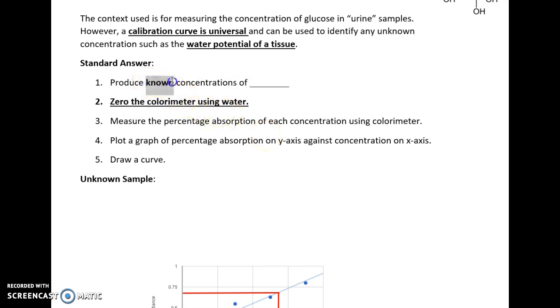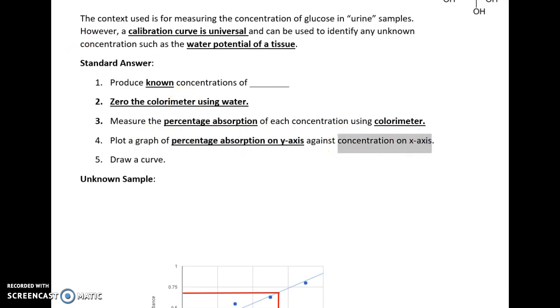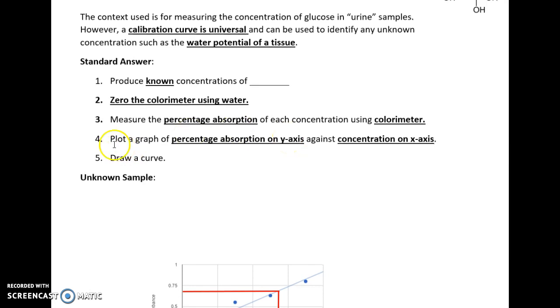Then, with the ones that we have the known concentration for, you need to measure the percentage absorbance of each of them using the colorimeter. Then, plot a graph of your results, and that will be percentage absorbance on the y-axis against concentration on the x-axis.